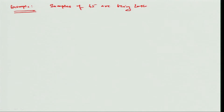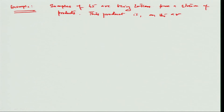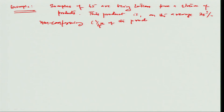Here is a small example problem. Samples of 45 are being taken from a stream of products. This product is on average 25 percent non-conforming, so p = 25/100 = 0.25. About a fourth of the product normally fails to conform to a certain specification.